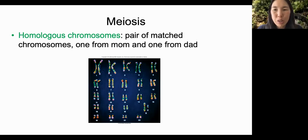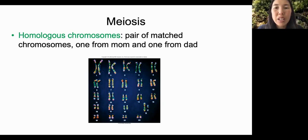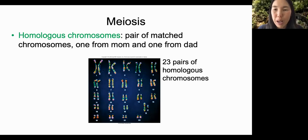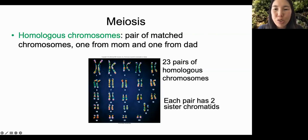Homologous chromosomes are a pair of matched chromosomes, one from mom and one from dad. Each of your cells has 23 pairs of homologous chromosomes. We call the matching chromosomes in each pair sister chromatids.